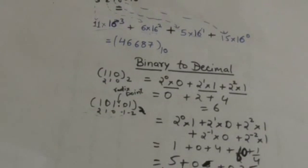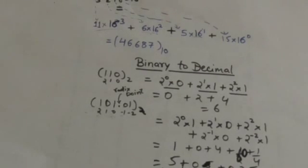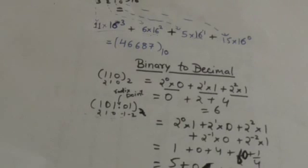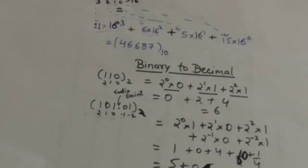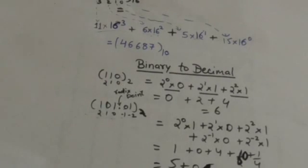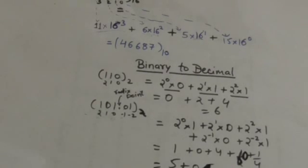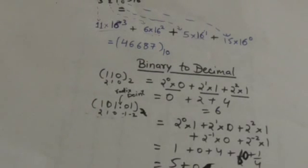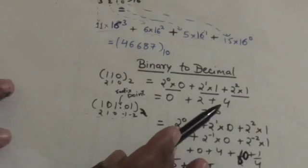Now, binary to decimal. Suppose we have to convert the binary number 110 into a decimal number. In binary, we have only two digits, 0 and 1, called bits. Assign a position to each bit, numbered from right to left starting from 0. Multiply each bit by 2 raised to the power of its position: 0 × 2^0, 1 × 2^1, and 1 × 2^2. Add all these terms and the answer is 6. So 6 is the decimal number equivalent to the binary number 110.